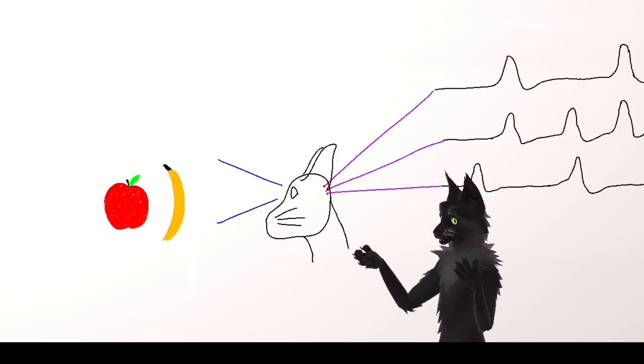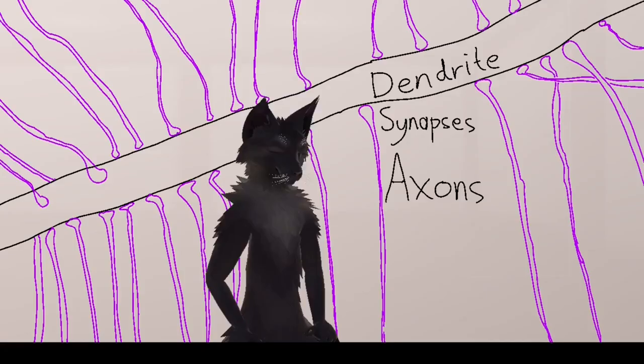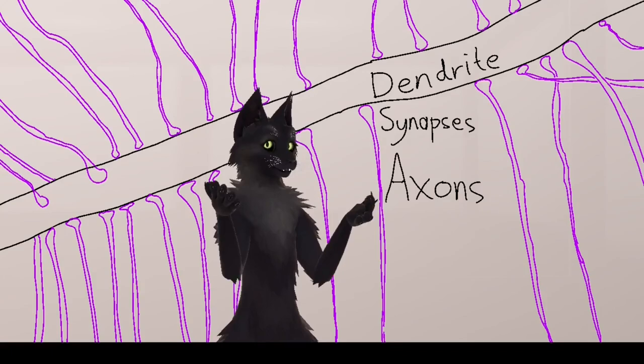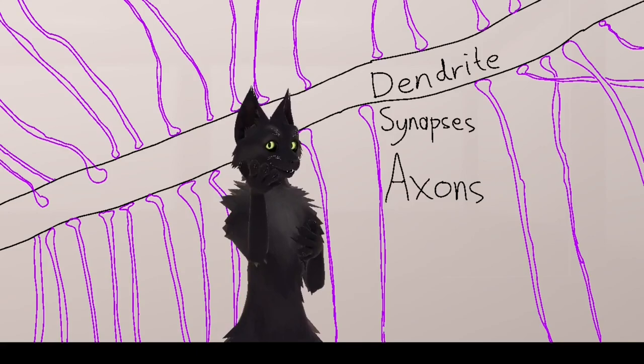We've disproved one hypothesis, and we've learned some new constraints on how the brain can encode information. The next waypoint on our journey is the dendrite. Before we can understand how neural activity encodes information, we need to understand how other neurons decode that information.